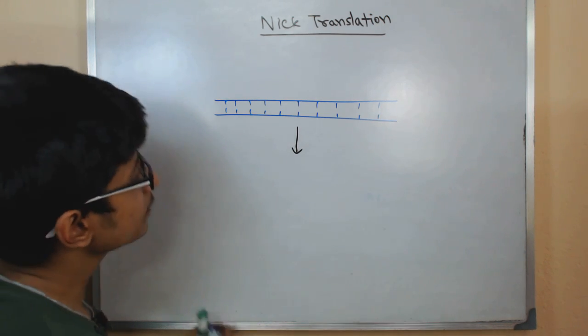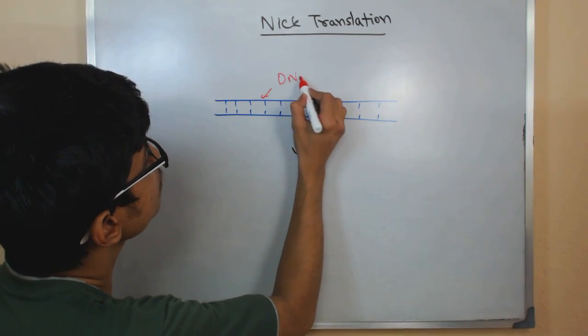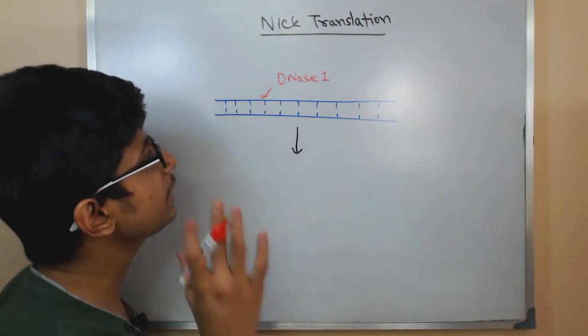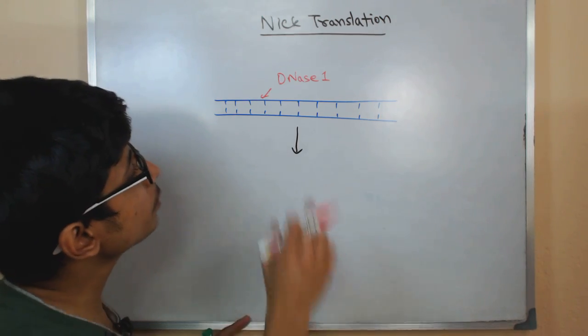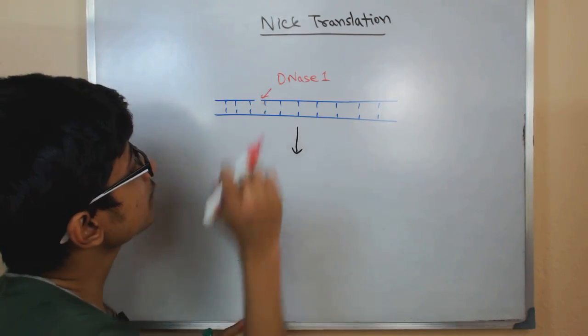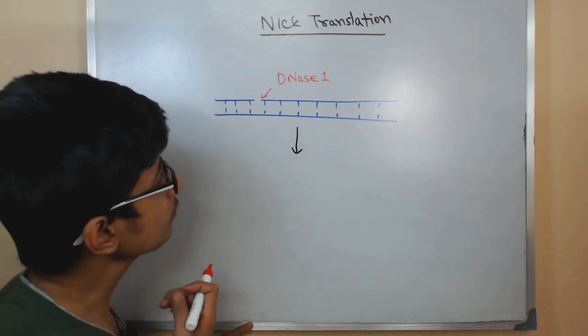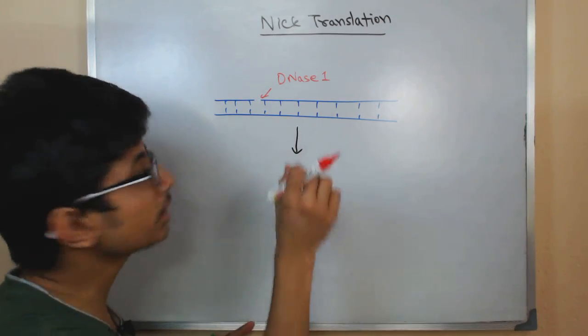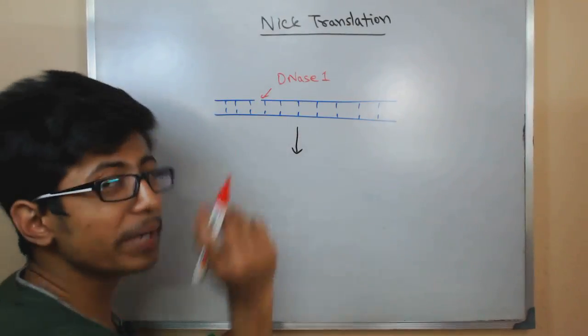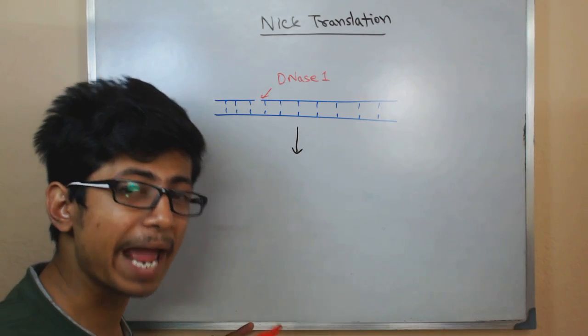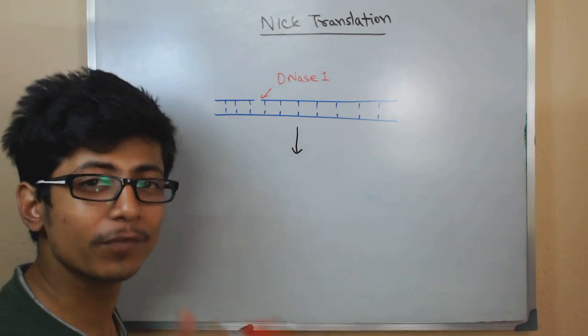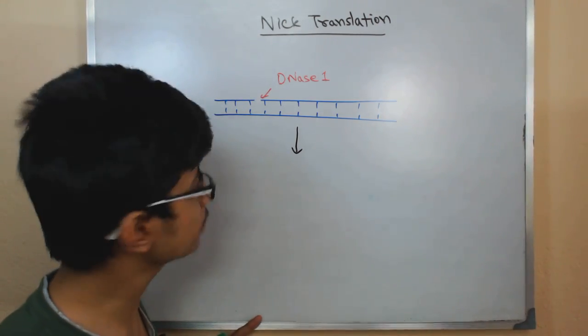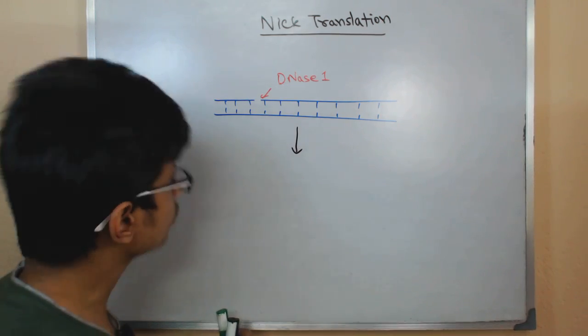We'll create a nick here and the nick is created by DNase I. So we have DNase I and the DNase I will cleave a particular region. For example, it cleaves from here. Once it creates a cleavage, remember DNase I is not removing any base. What it does actually is it breaks the phosphodiester bond or phosphodiester backbone of the DNA. It's not removing any nucleotide sequence. Once the DNase I activity is reached or done,